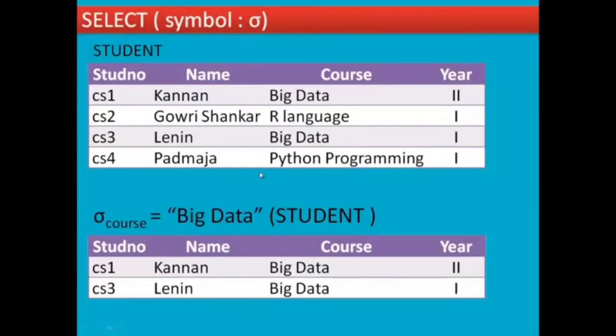For example, if you have a table, you will see sigma of condition course equal to big data of student. When you get the student table, you get the course and filter where the condition is big data. We will see the big data in the table, CS1 and CS3, and that is the output.